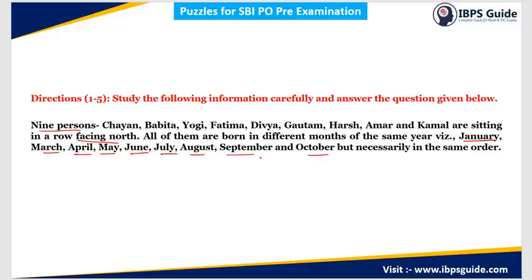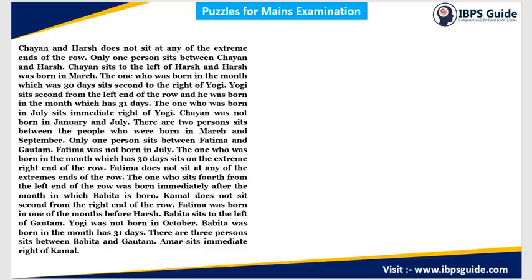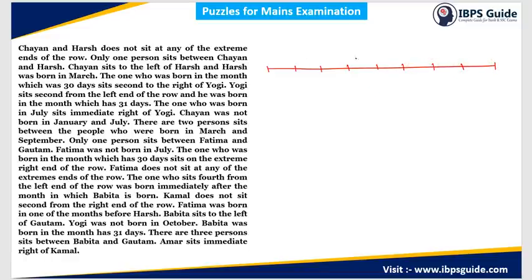Now we move to the main clues for this puzzle. First: Chayan and Harsh do not sit at the extreme ends of the row. So positions 1 and 9 are not possible for either of them. Second: only one person sits between Chayan and Harsh, and Chayan sits to the left of Harsh. Since all persons face north, Chayan will be to Harsh's left with one person between them. Harsh was born in March.